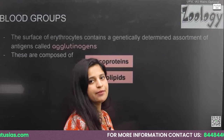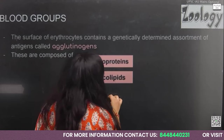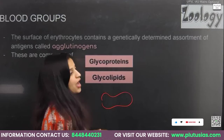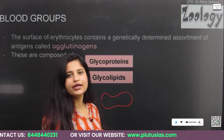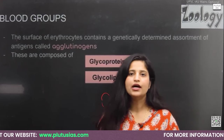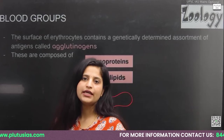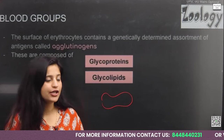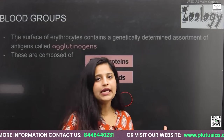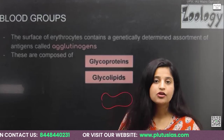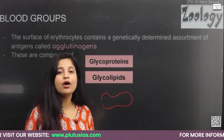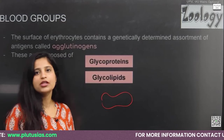RBCs have a biconcave shape. RBCs do not contain mitochondria, nucleus, or endoplasmic reticulum, because they need space for containing a very important pigment — hemoglobin — which is the carrier for oxygen as well as CO2 gases.